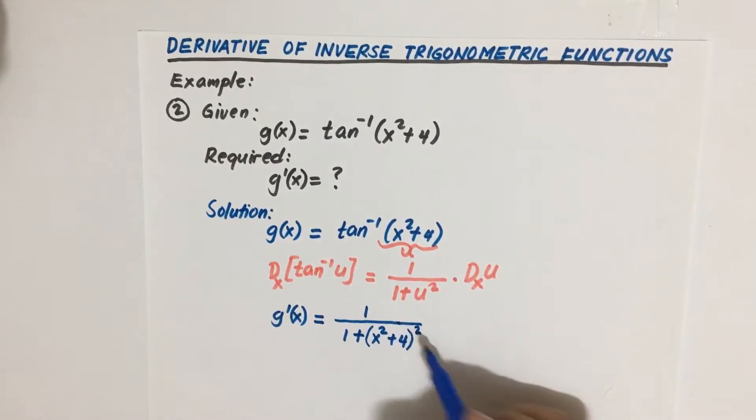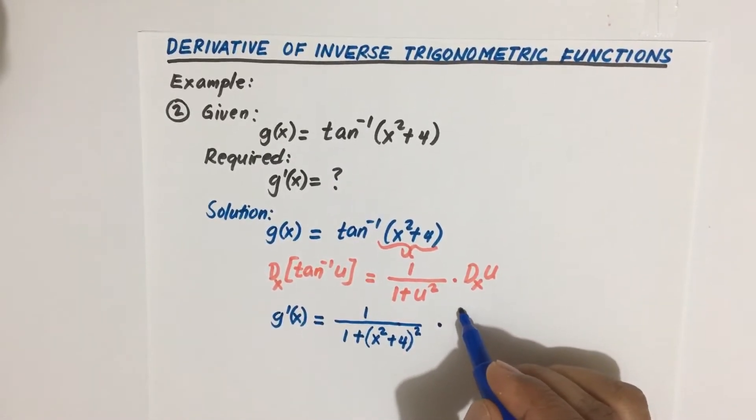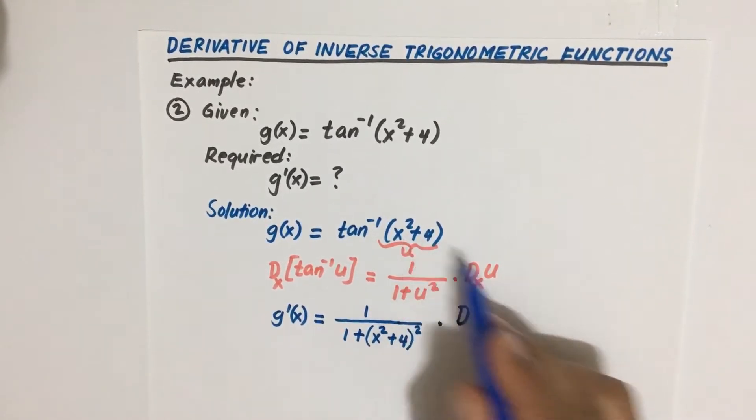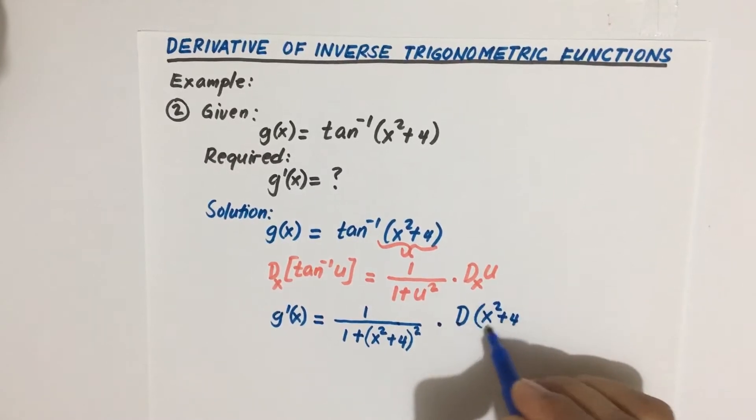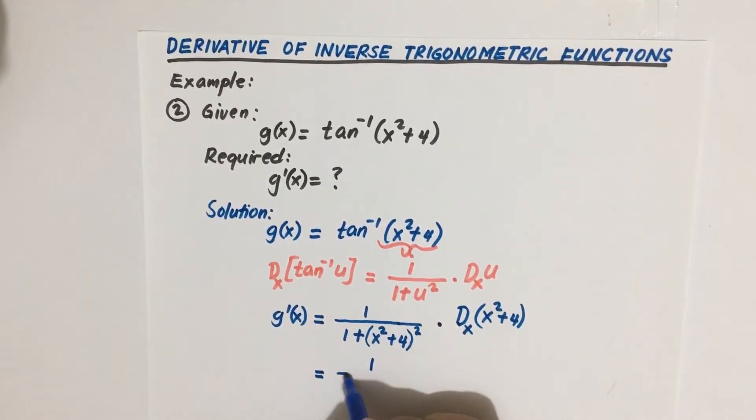this is squared, then times the derivative of u. Our u is x squared plus 4 with respect to x.